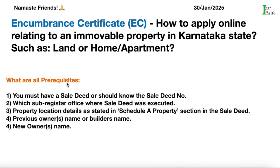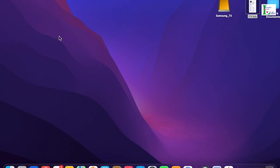To get an Encumbrance Certificate, the prerequisites required are: number one, you must have a sale deed or know the sale date; number two, which sub-registrar office where the sale deed was executed; number three, property location details as stated in the Schedule A property section in the sale deed. If you scroll down in the sale deed, you will find a section called Schedule A property.